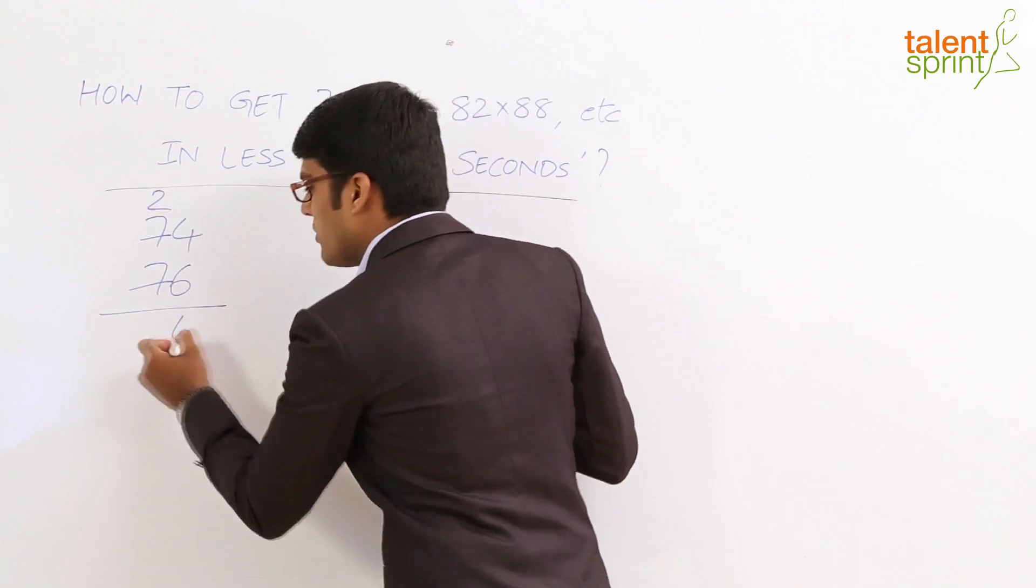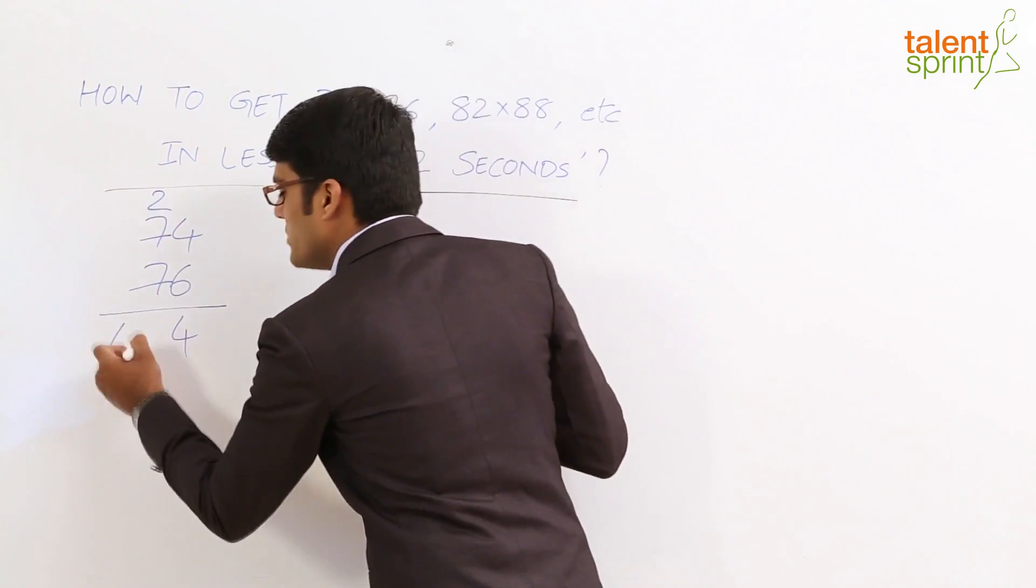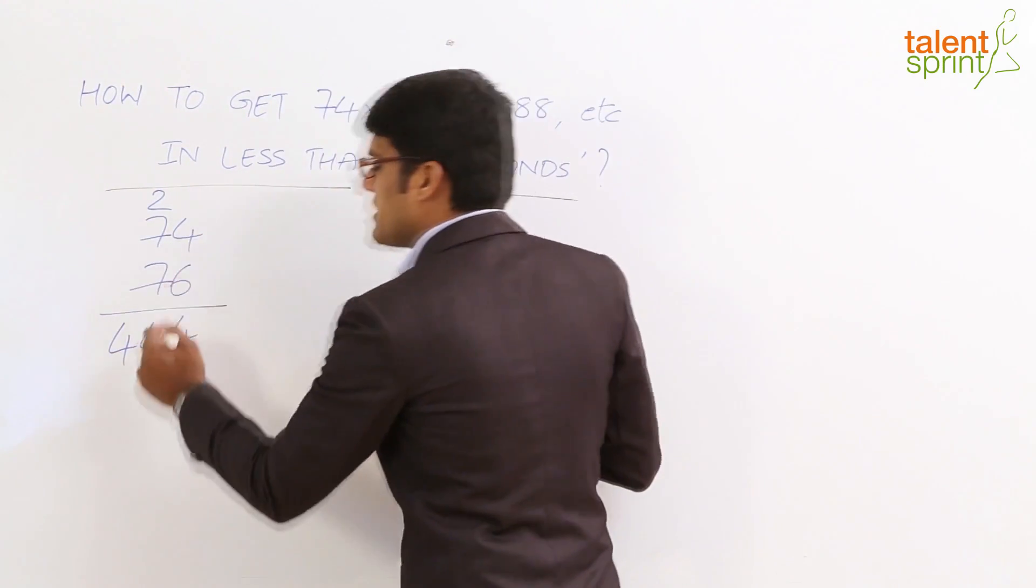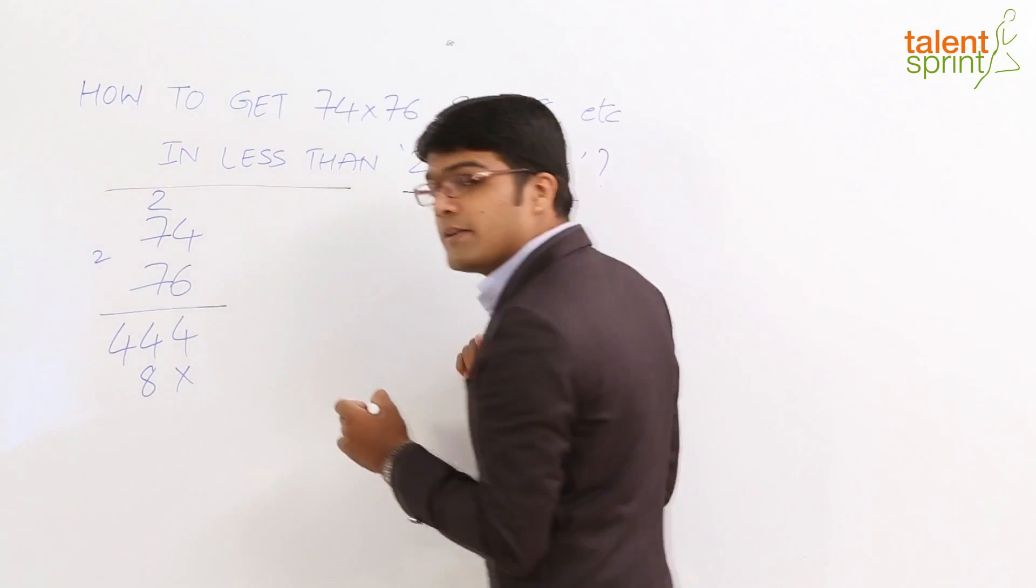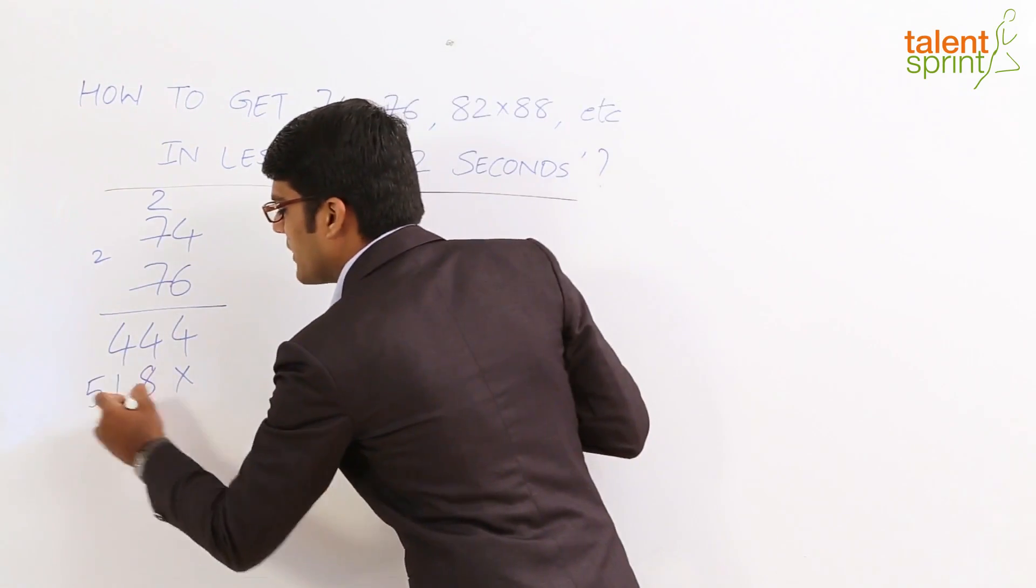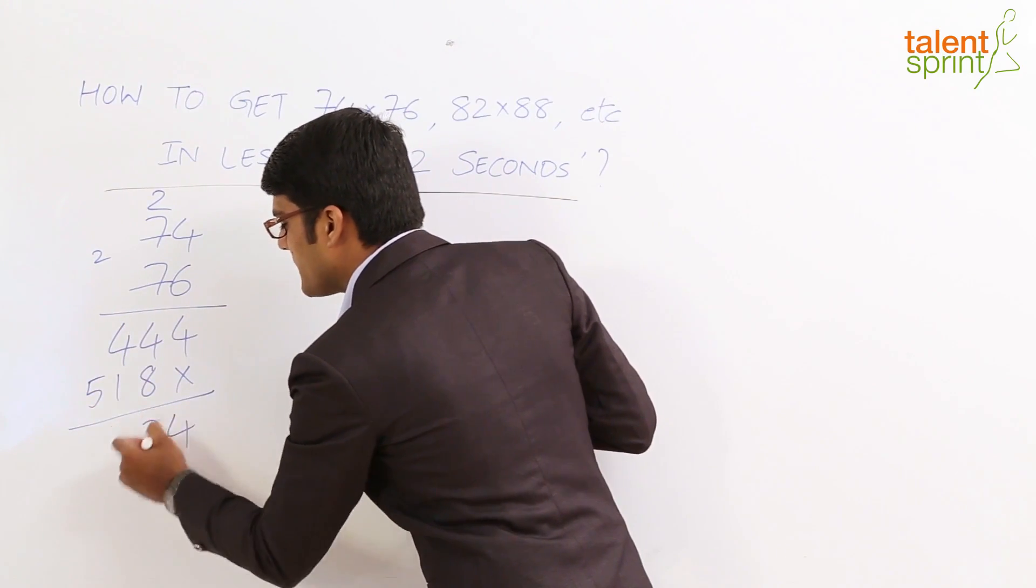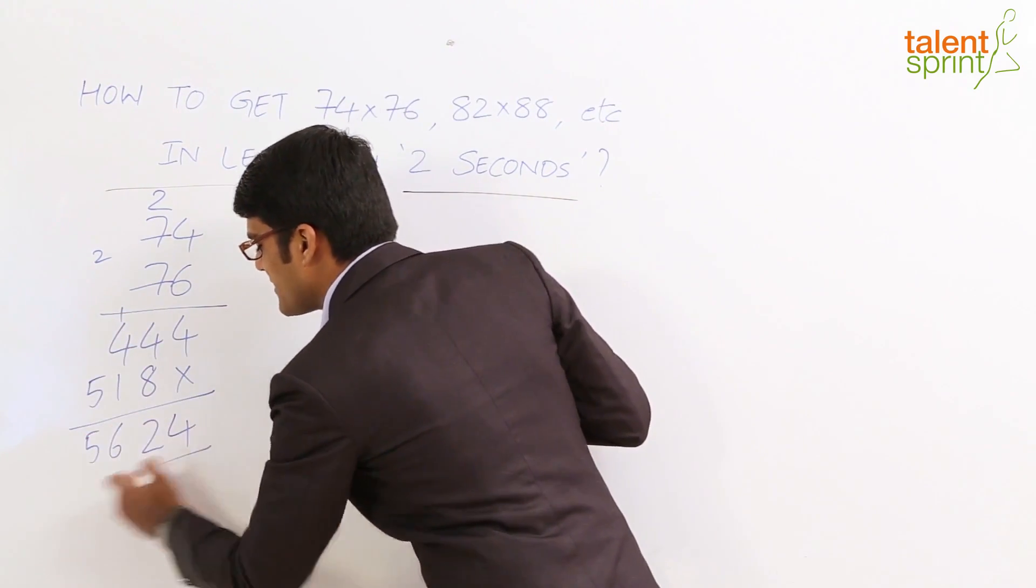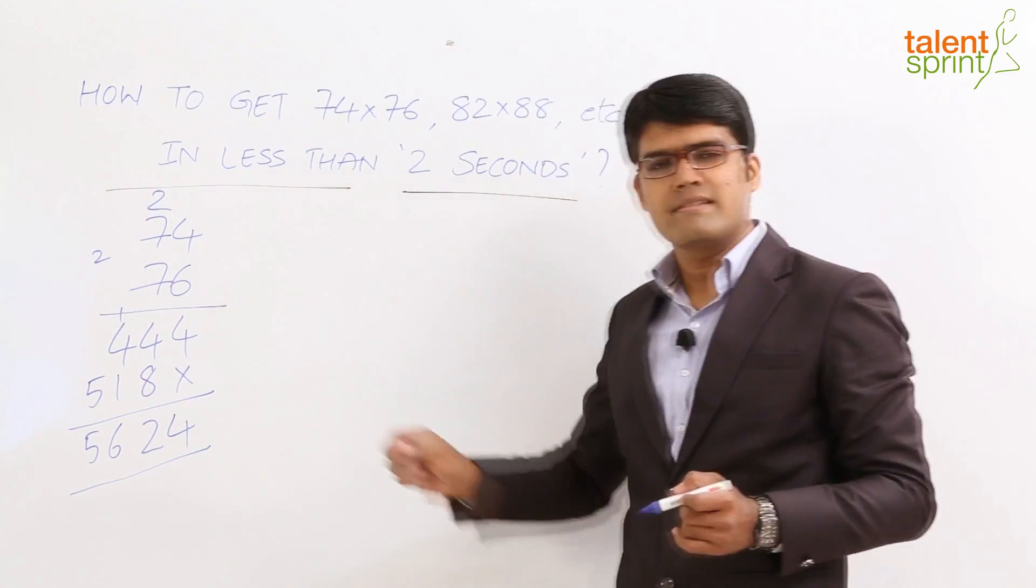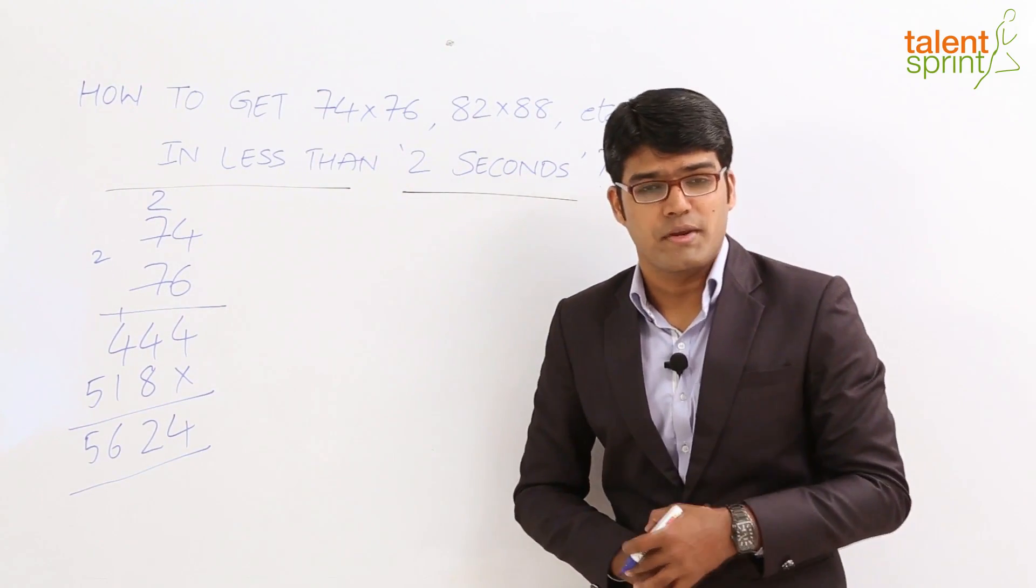6 into 4 is 24, 6 into 7 is 42 and 2 there is 44. Then we go with the tens place multiplication: 7 into 4 is 28, 2 gets carried forward, 7 into 7 is 49 and a 2 makes it 51. So the final answer here would be 5,624, which means 74 multiplied by 76 results in 5,624.